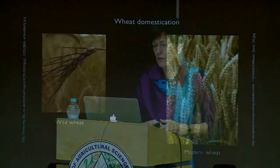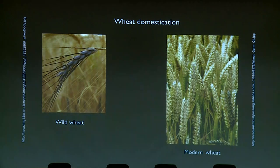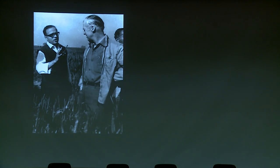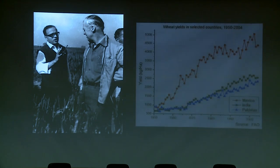Per acre yields averaged out over all acres continued to increase. A similar story lies behind modern wheat, which was domesticated roughly 9,000 years ago in the Middle East. The huge increase in global wheat yield happened in the 20th century through the efforts of agronomists like Norman Borlaug, who developed modern high-yielding dwarf varieties. Working together with Swaminathan — shown here in a very old picture with Borlaug — they were able to increase wheat yields in Mexico, India, and Pakistan.